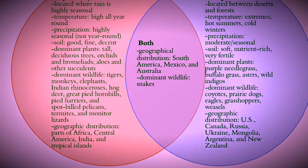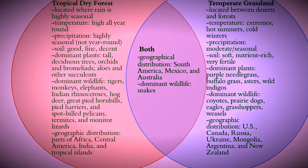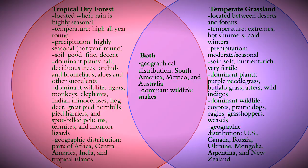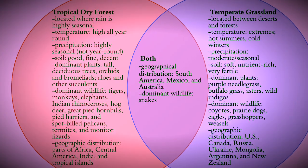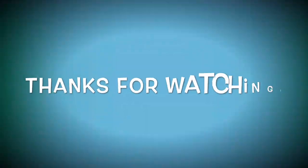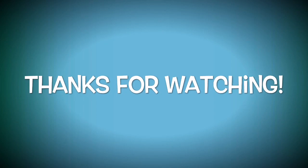Lastly, this Venn diagram shows the similarities and differences between the tropical dry forest and the temperate grassland. This concludes our video brochure. We hope this convinces you to come to at least one of these biomes.